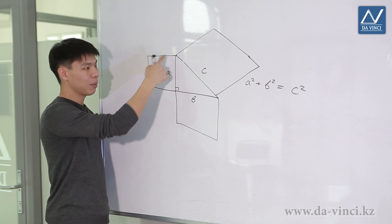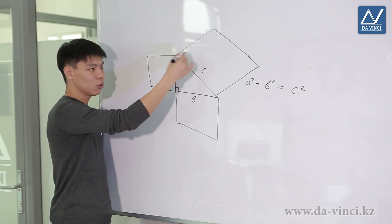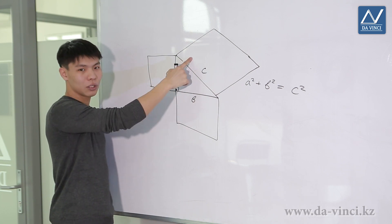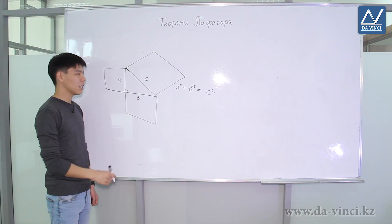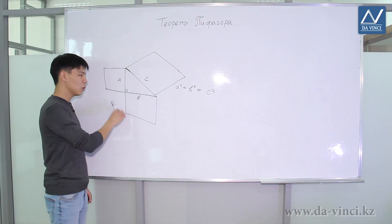If you build not squares, but any similar figures, let's say semicircles, then the sum of these areas will still be equal to the area of figure built on the hypotenuse. At the moment, there are more than 200 different proofs of the Pythagorean theorem.